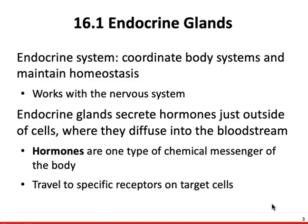The endocrine system is going to be responsible for coordinating body systems and helping to maintain homeostasis. The endocrine system works in harmony with the nervous system. It is a much more leisurely system of communication than the nervous system because we have to wait for the hormones to diffuse to wherever they need to go throughout the body, but it does work in tandem with the nervous system to help maintain homeostasis.